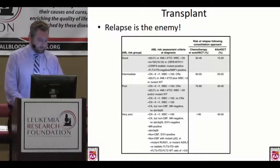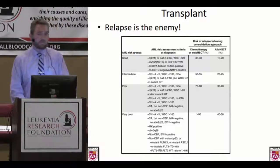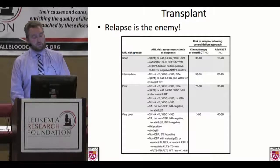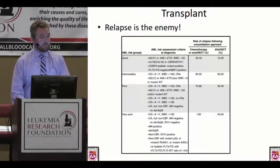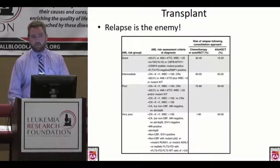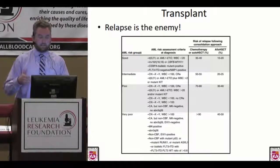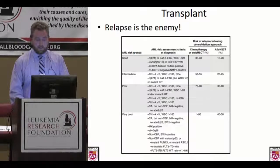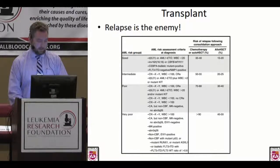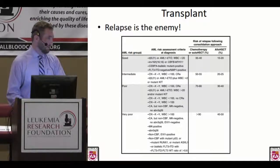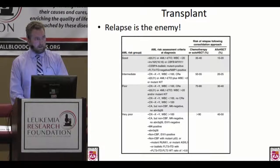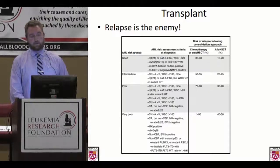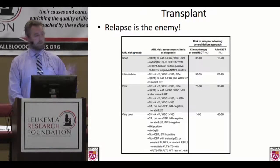Relapse is the enemy in AML and our goal is to keep people in remission. When someone comes in for a clinic discussion about the role of transplant, the most important thing I'm trying to define is what is their risk of relapsing with chemotherapy as opposed to with transplant. That risk is heavily dictated on the risk of the disease itself. This was a nice paper from a Dutch group that looked at four different risk groups and asked: after induction chemotherapy and remission, what is the chance of relapsing with chemotherapy versus transplant?